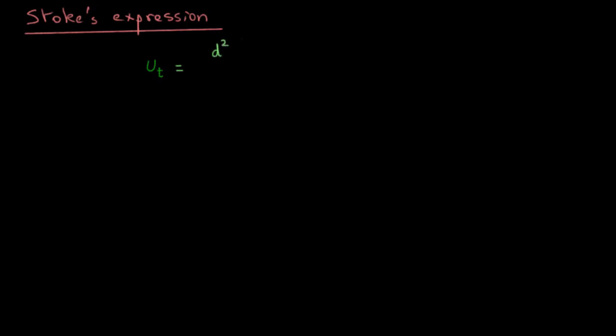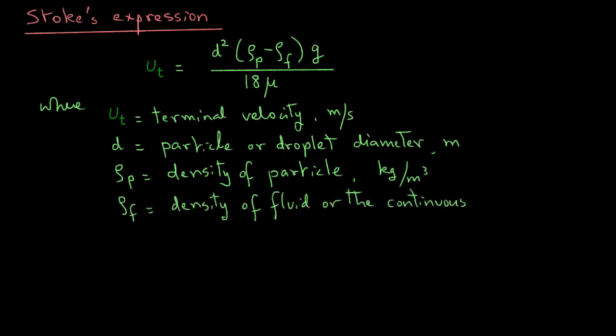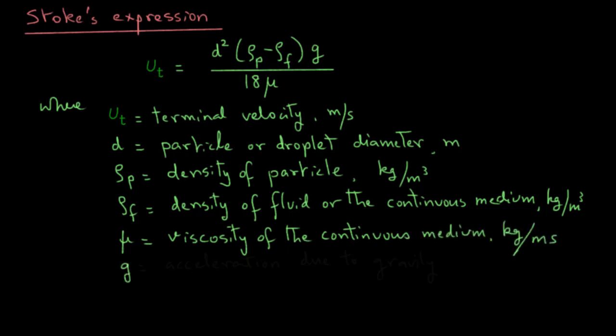equals d square times (rho p minus rho f) times g divided by 18 times mu, where d is the diameter of that particle or the droplet, rho p is the density of the particle, rho f is the density of the fluid or the continuous medium, which could be air or water. mu is the viscosity of that continuous medium, and g is the acceleration due to gravity, which is 9.81 meter per second square.